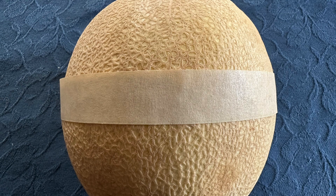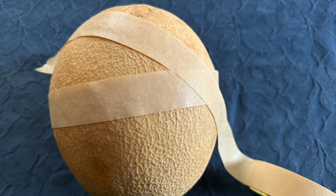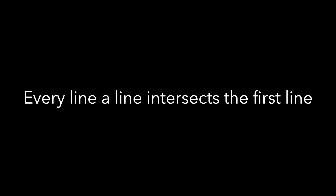It's not a proof, but let's return to our cantaloupe. Last time we drew a line — pick any point not on that line, and pick any direction. Your line will intersect the existing line in two places. Doesn't matter what direction you choose, there's no way to draw a line that doesn't intersect the first line.